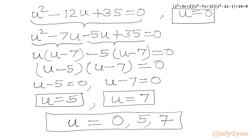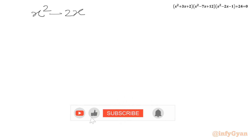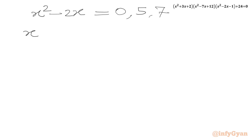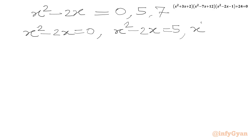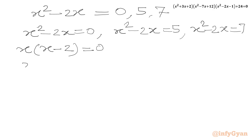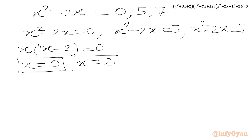Recalling that u = x²-2x, we solve each case. For u = 0: x²-2x = 0, so x(x-2) = 0. Using the product-zero rule, x = 0 or x = 2. These are our first two real solutions.